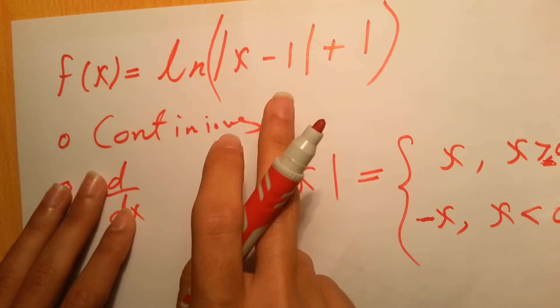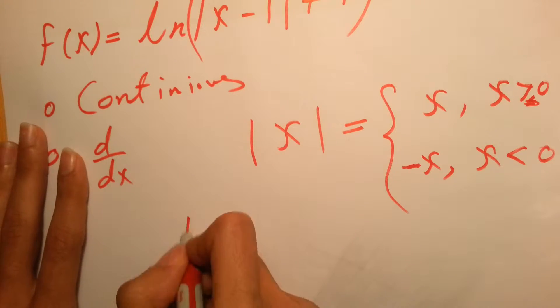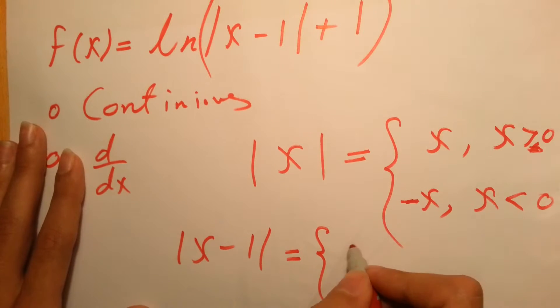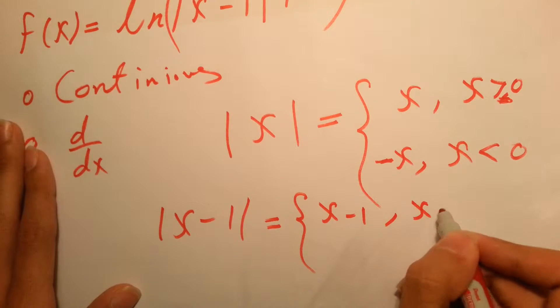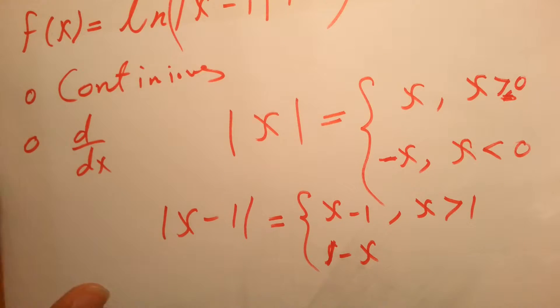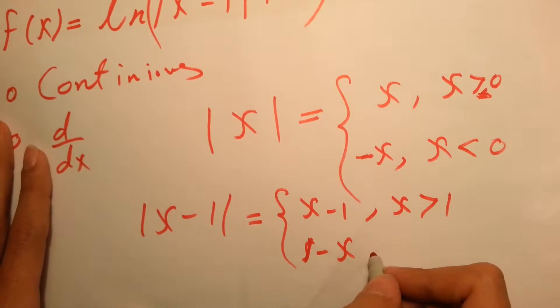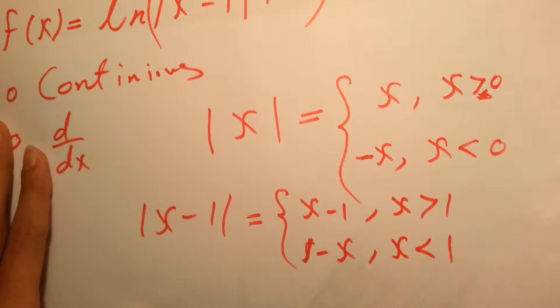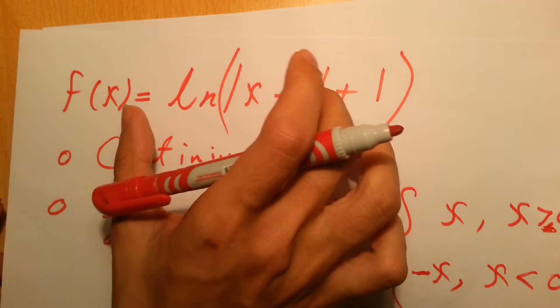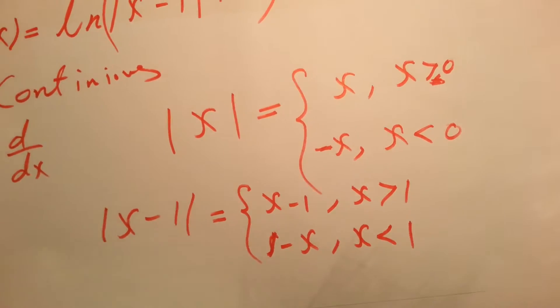So in this example we've got x minus 1. The absolute value of x minus 1 equals x minus 1 for x greater than 1, and 1 minus x, which is the negative of it, for x less than 1. So let's write the whole function using this.